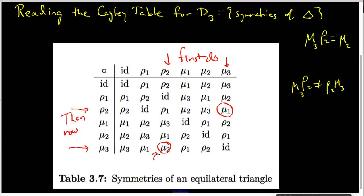So in other words, this mu two represents first do row two, then do mu three, whereas this mu one represents first do mu three, and then do row two.